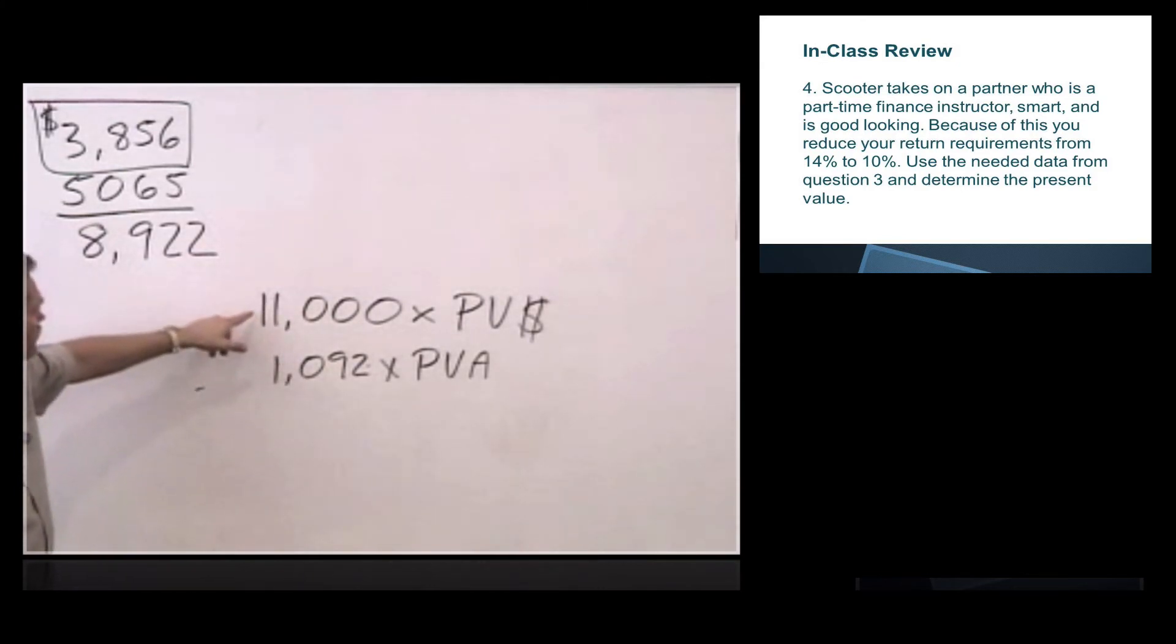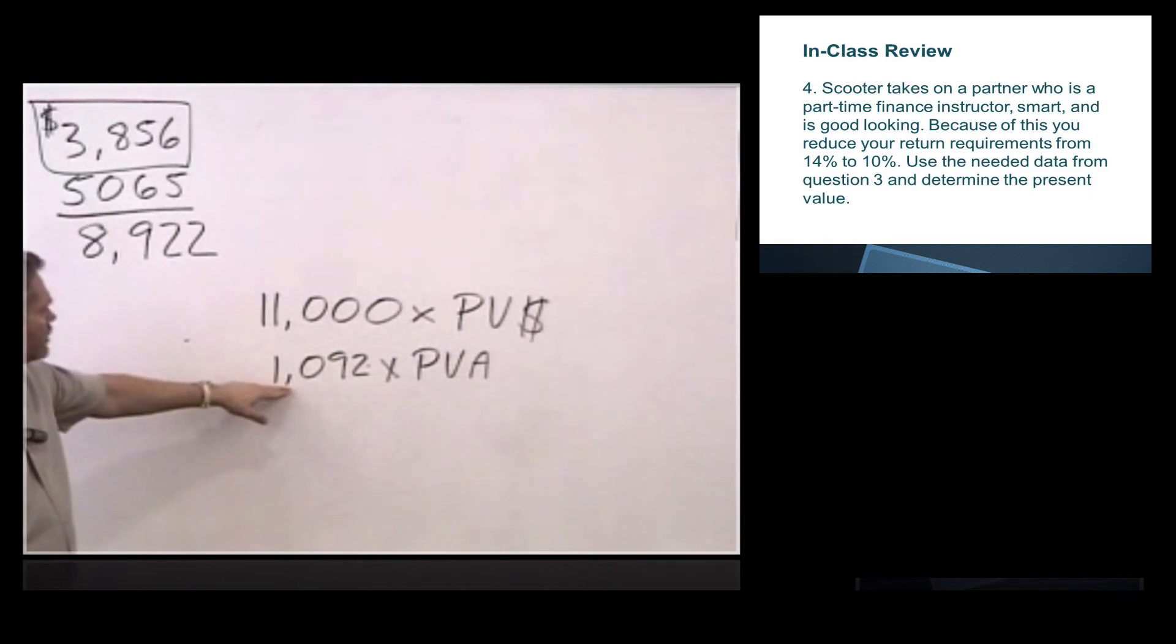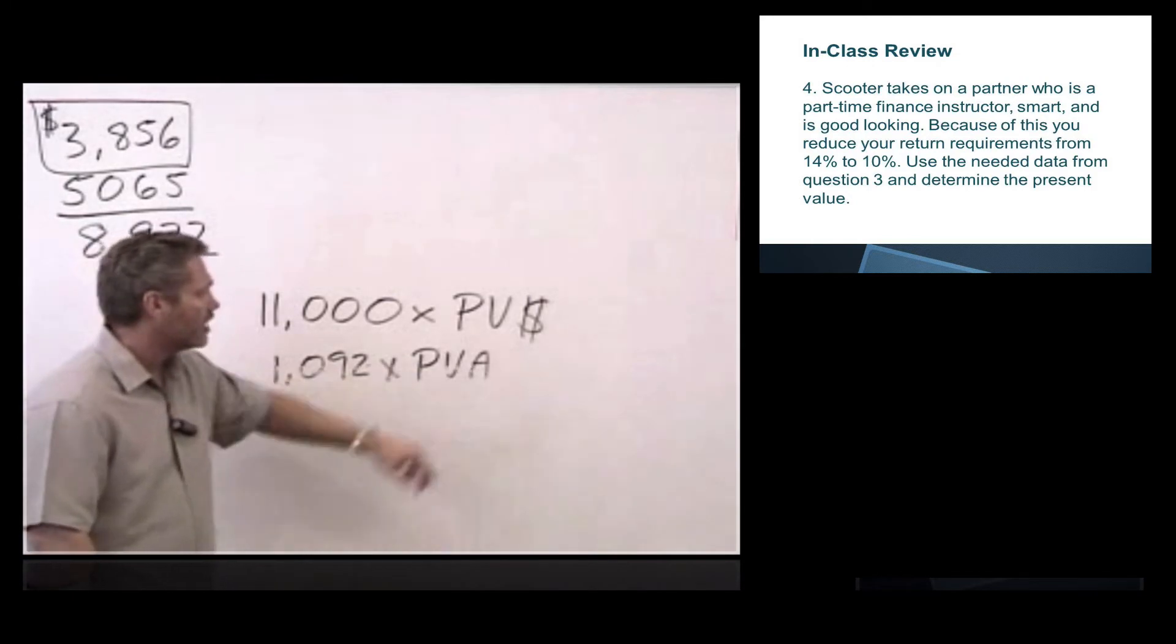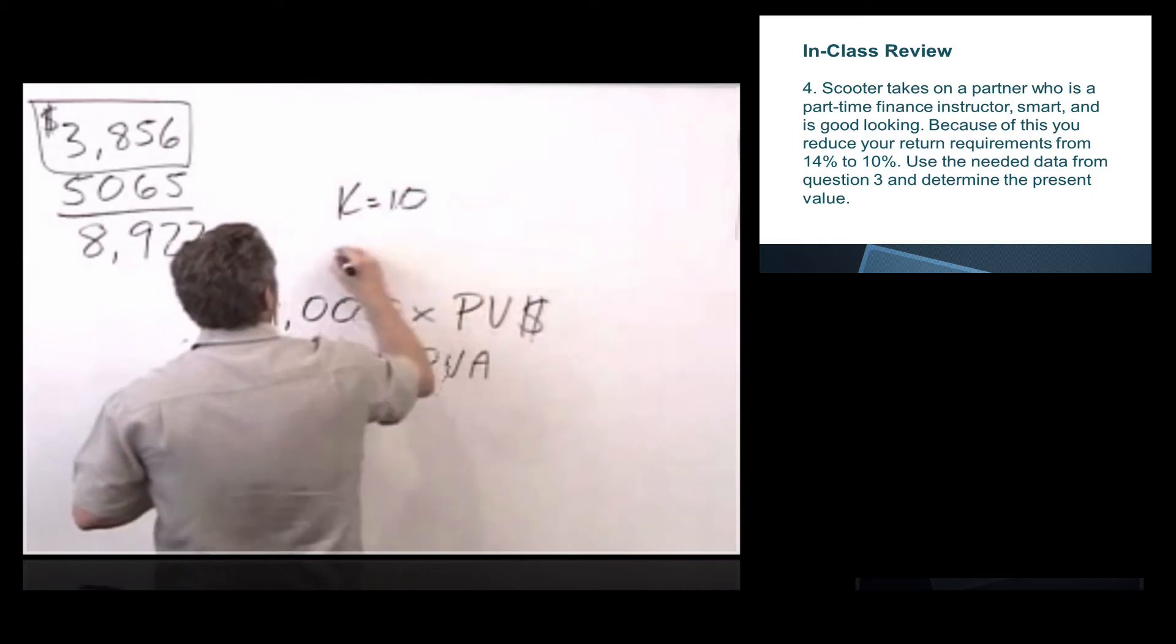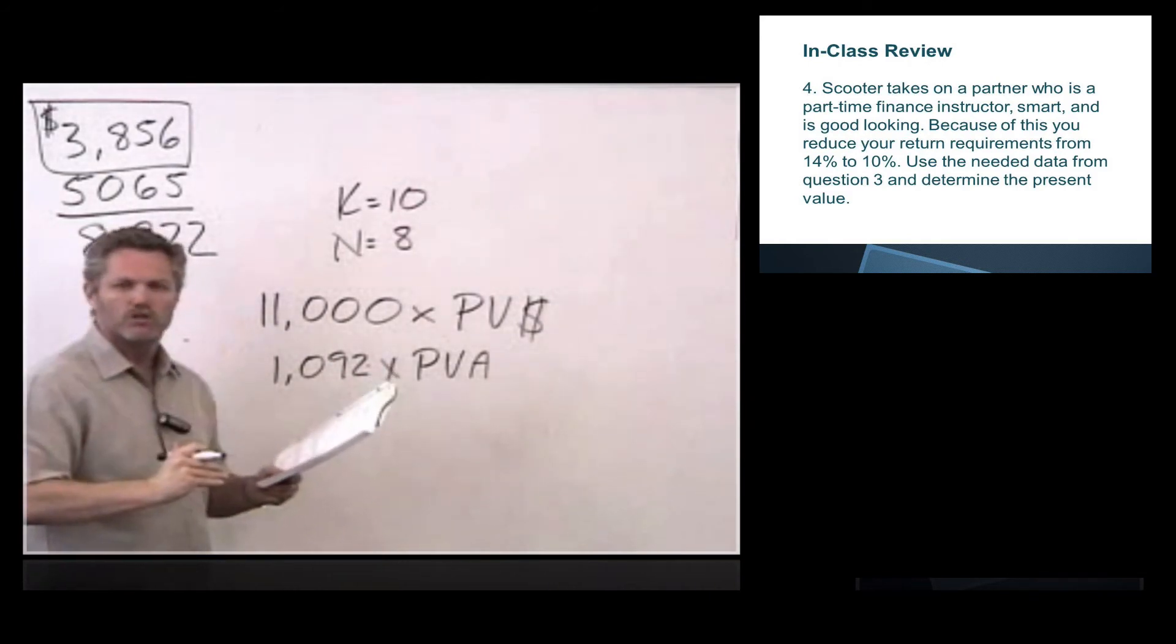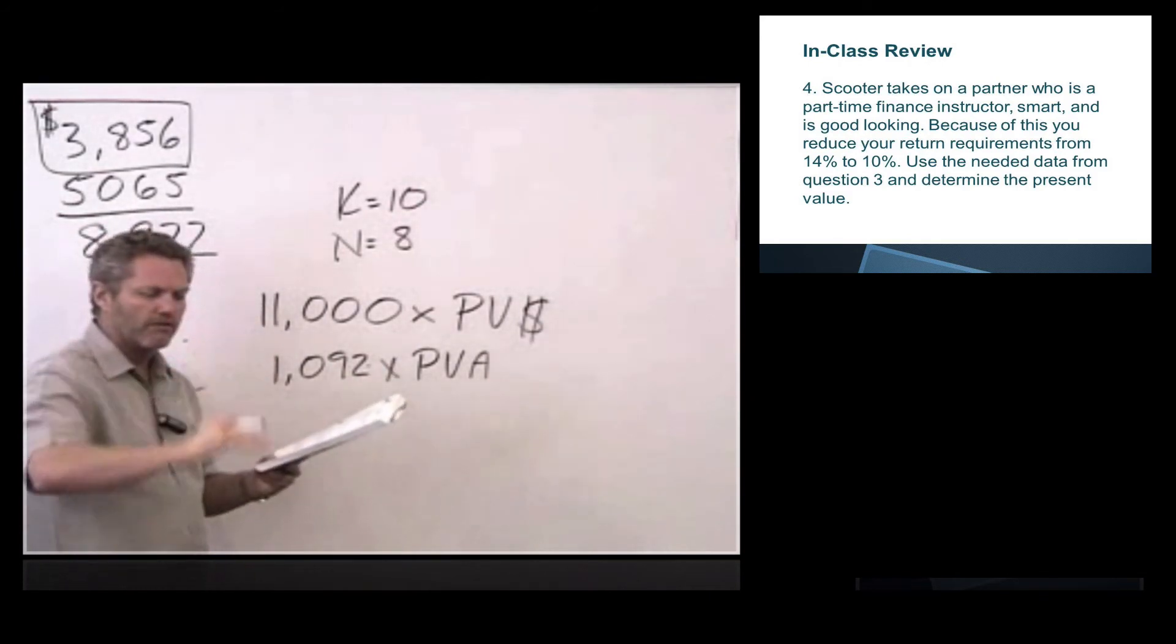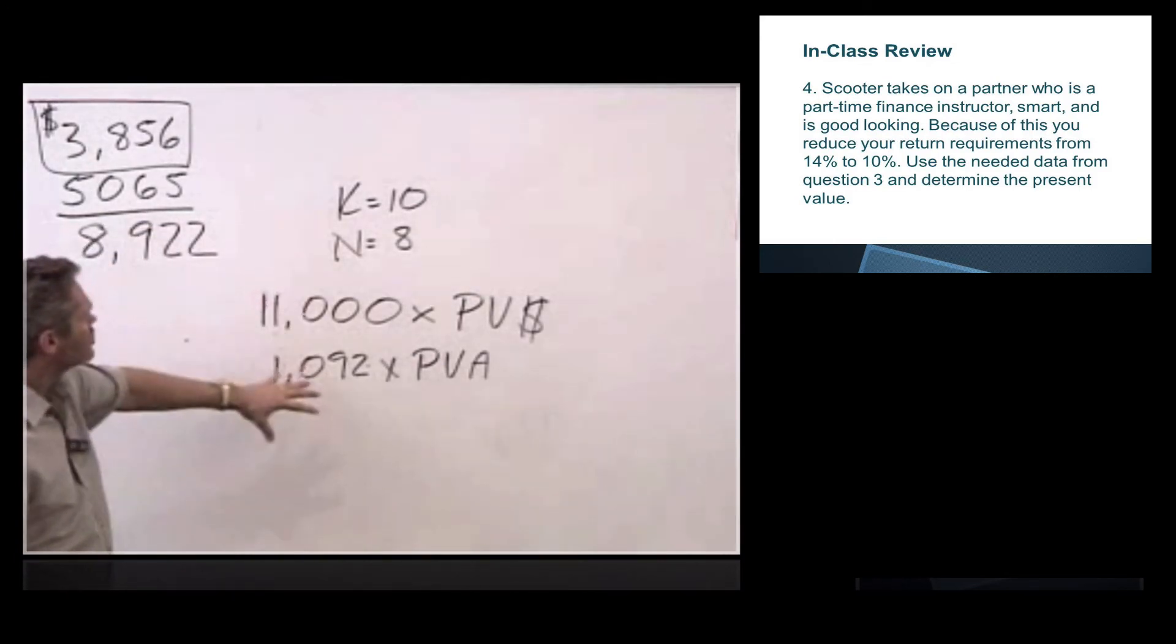So, just kind of erased everything. We have our original $11,000 that Scooter promised to give us, and we want to know what that's worth today using present value of a dollar. We have the pies that are $1,092, and we have an annuity of pies, so present value of annuity. And we've got K equals 10 now, and N equals 8. And so, everything has stayed the same in our problem, except the interest rate has fallen. And when interest rates fall, when you're discounting, the value's going to come up. So before I start this calculation, I know for sure my value's going to be greater than $8,922.